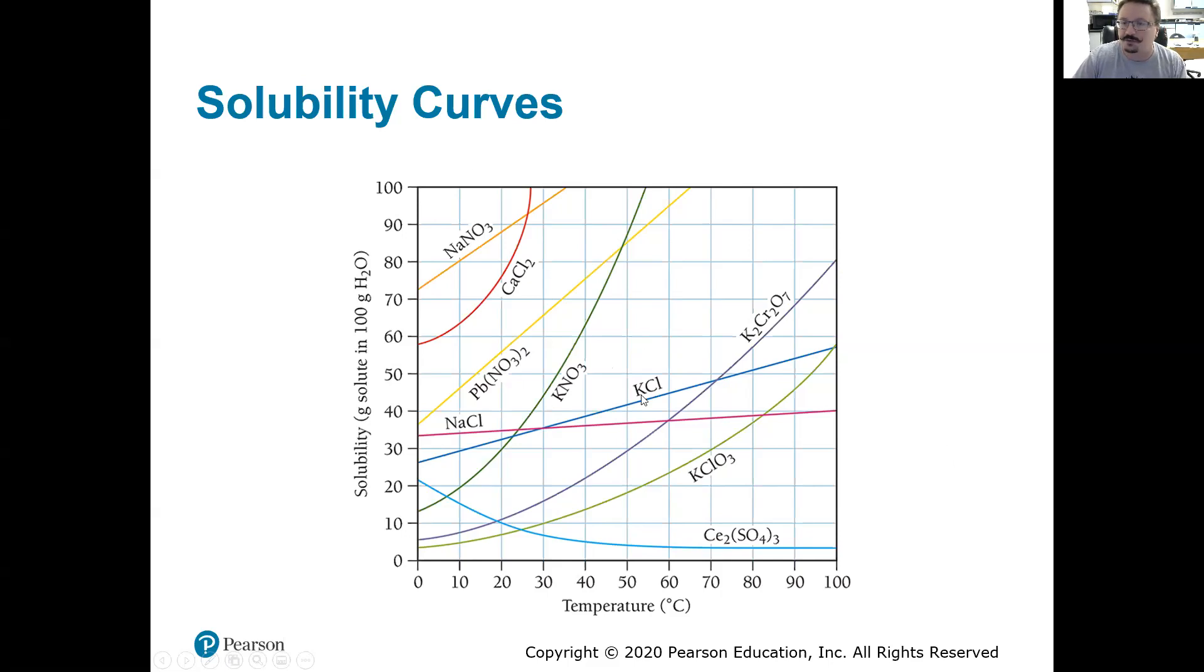We're not going to have to make you draw any of these. We're not going to have you memorize the shapes. But let's say we're looking at potassium chloride here, that dark blue line. And we asked you, how much potassium chloride could we get to dissolve in water at 80 degrees? So in that case, you'd look at the 80 degrees right here and you'd go over and you'd say, oh, we could get about 52 grams of potassium chloride to dissolve in 100 grams of water.